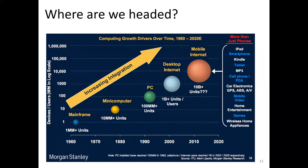Where are we headed? As you can see from the graph, the history of the network itself is given starting from 1960 until 2020. We started with mainframe, then developed to mini computers, and in 1990 started using personal computers (PC). Then in 2000 we started using desktop internet, and now most people are using mobile internet.